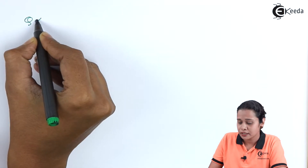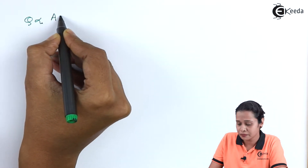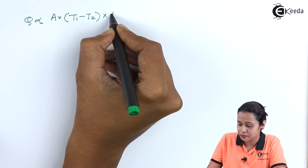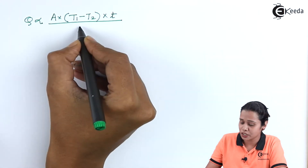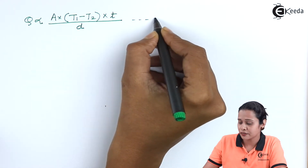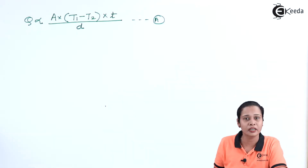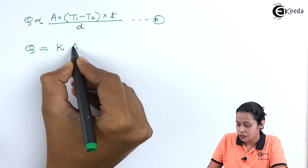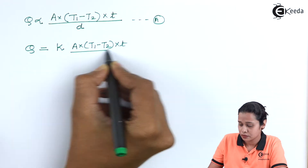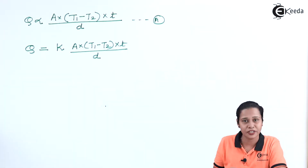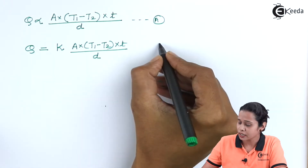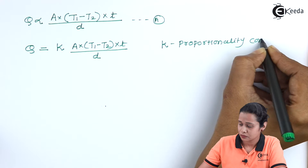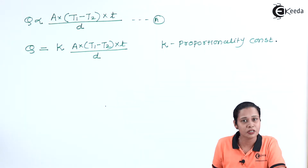Let us combine all four equations. We can write Q is directly proportional to cross-sectional area, directly proportional to the temperature difference, directly proportional to time, and inversely proportional to the distance between the two faces. This is equation A. Now we will put a proportionality constant, so Q is equal to K times A. Here K is the proportionality constant, also called the coefficient of thermal conductivity.